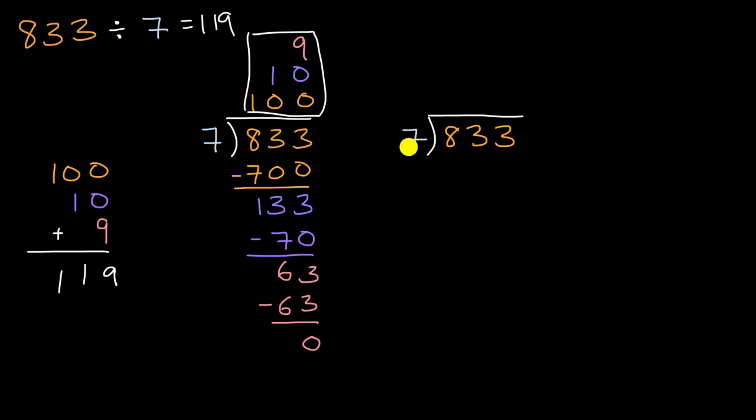We could have said, maybe it goes 150 times. So you could have said my current guess or estimate is 150 times. Then I could multiply 150 times seven. How would I do that? Zero times seven is zero. Five times seven is 35. You can carry the three, so to speak.